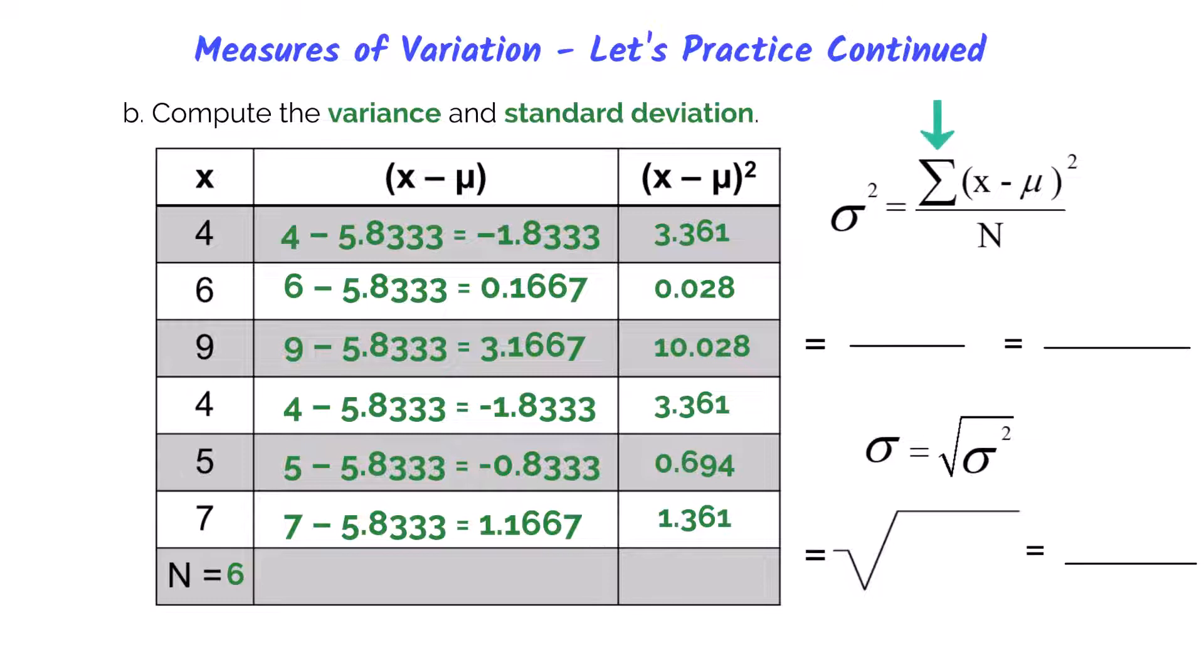Now the next step we must do, according to the formula, is you sum or add everything up. So we can do that, and we get 18.833. So finally, we're going to take this number and we're going to divide by the population size. So taking 18.833 and dividing by 6, and we get 3.1389.